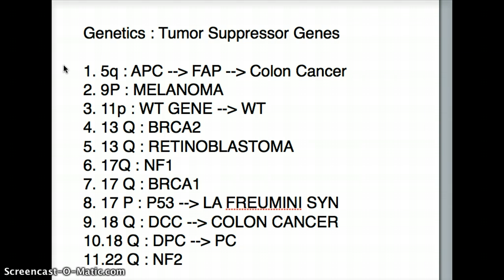When talking about a chromosome, you'll always hear about the short arm and the long arm. If you look at a chromosome there's a kink in the middle, and the kink is not always proportional — there is a short end and a long end. The short end is called P and the long end is called Q. You can have two different tumor suppressor genes on exactly the same chromosome and the same arm but at different loci.